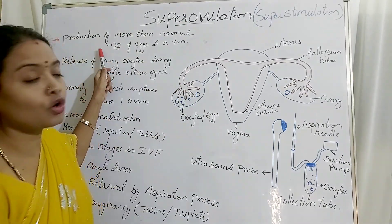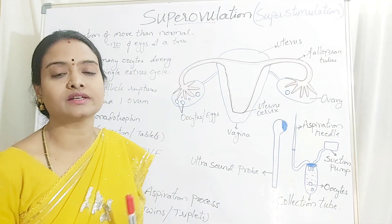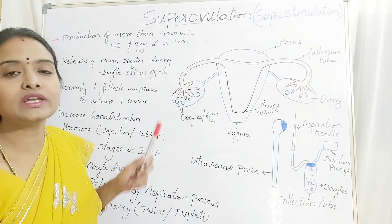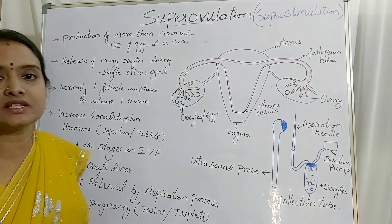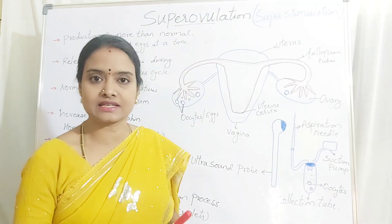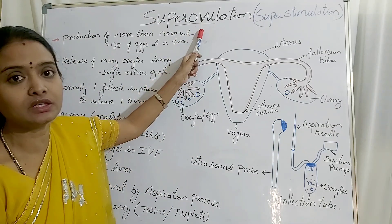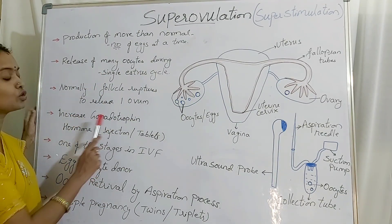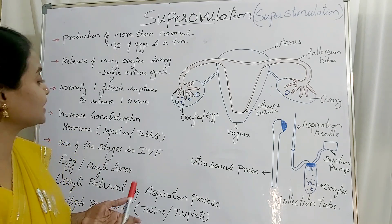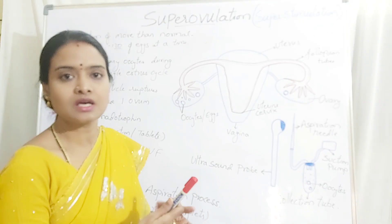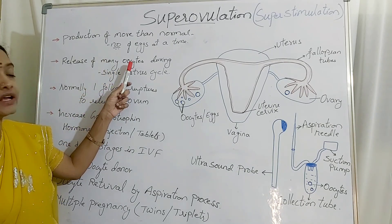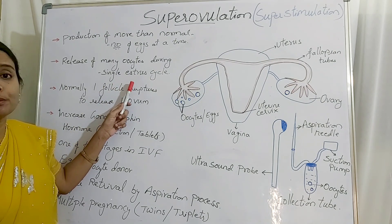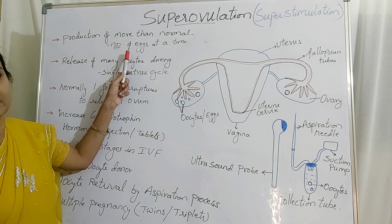Normally one egg will be produced at a time. When you observe a single estrous cycle, only one follicle will be ruptured and it will release one oocyte or egg cell. But in the case of super ovulation, you are increasing the gonadotropin hormone by giving injections or tablets, so the animal produces more than one oocyte per single estrous cycle.